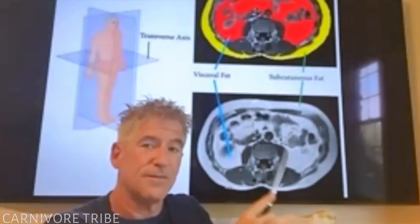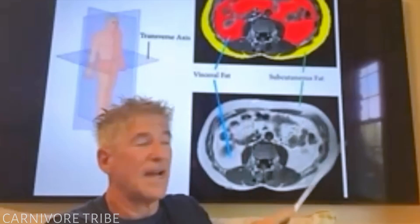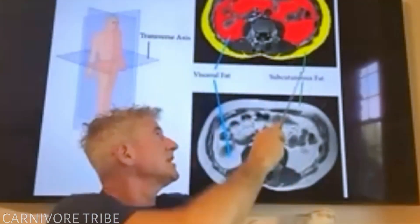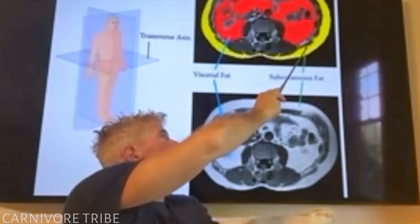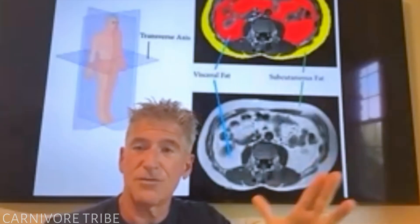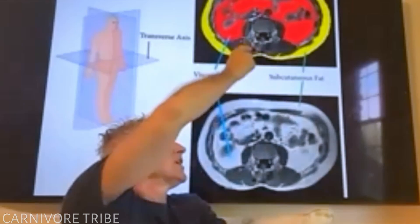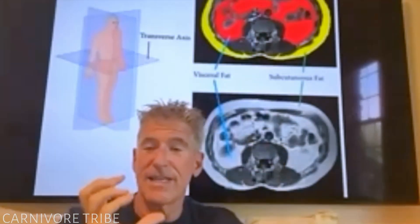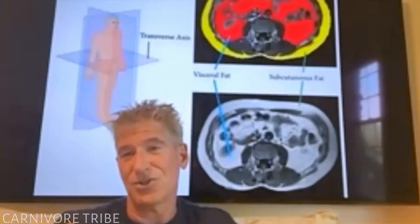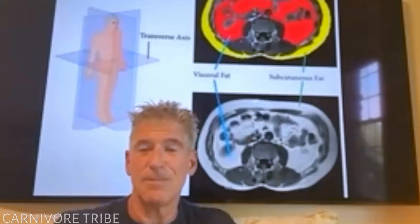We've added color to this image to help differentiate between subcutaneous fat and visceral fat. The subcutaneous fat is just underneath the skin and is painted yellow in the image. Visceral fat, shown in red, is in the center part of your abdomen. You can't access it — unless you did surgery, you can't get to it, you can't see it. It's hidden deep inside of you.